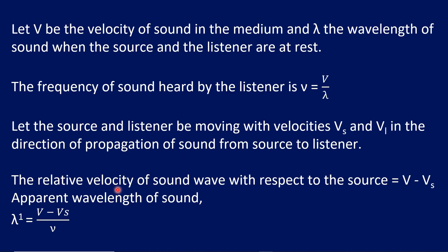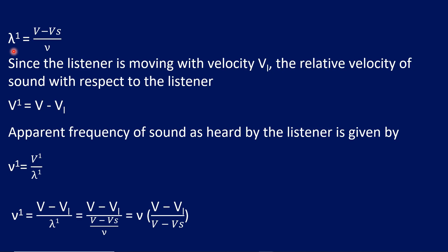We consider the relative velocity of the sound wave with respect to the source. The velocity of sound with respect to the source is V minus Vs. The apparent wavelength of the sound — the expression for wavelength is V divided by nu. So lambda dash is equal to V minus Vs divided by nu. Nu is the frequency of the sound heard by the listener.